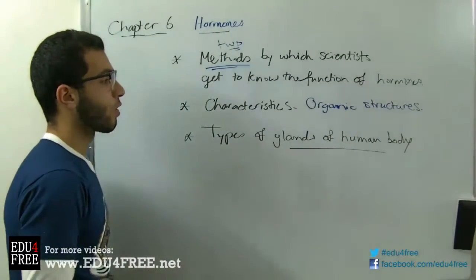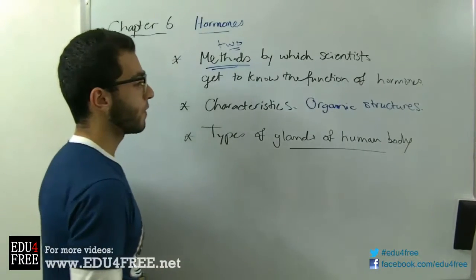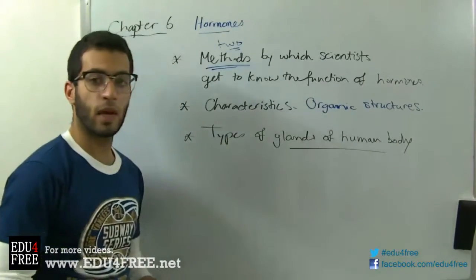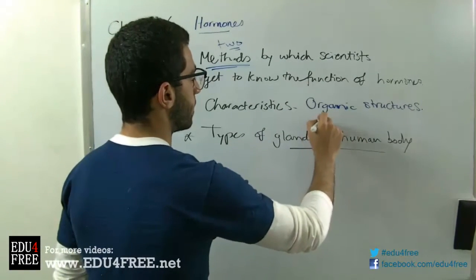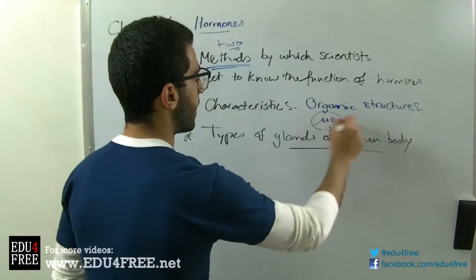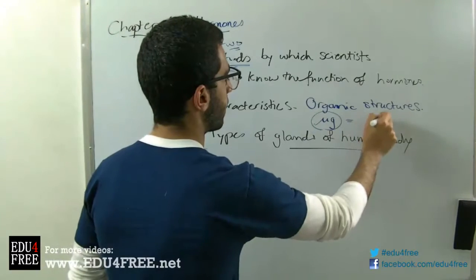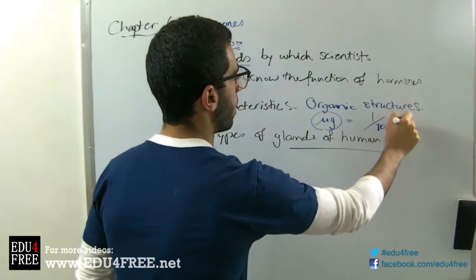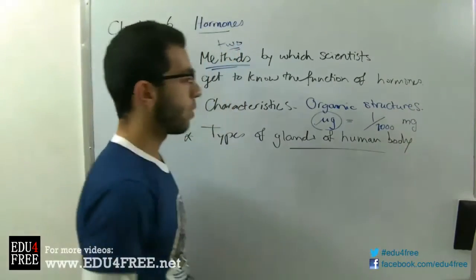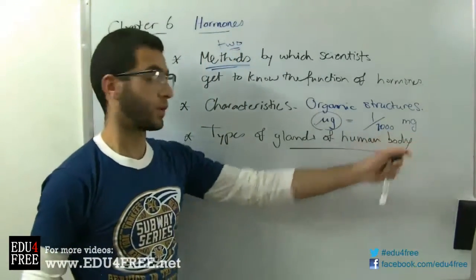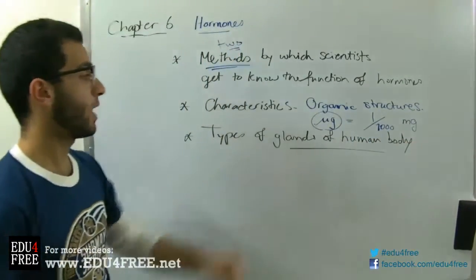And also hormones are produced in very, very little amounts measured in micrograms. A microgram equals one over a thousand of a milligram, one over a thousand of a milligram. So very little amounts of hormones.